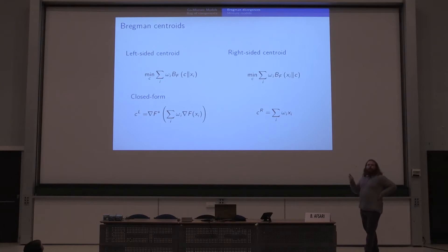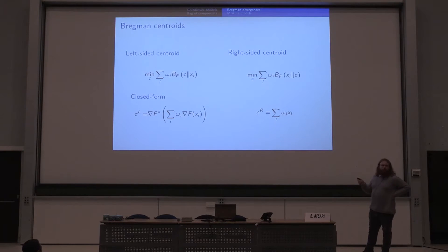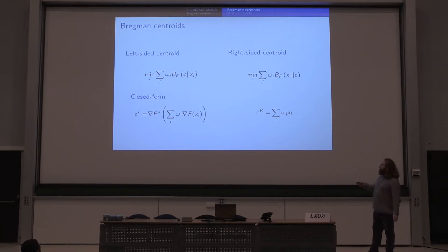Since the Bregman divergence is not symmetrical, we have two different notions of centroid: a left-sided one, where the minimization problem is on the left argument of the Bregman divergence, and a right-sided centroid, where the centroid is on the right side. In both cases, we have a closed-form formula to compute it efficiently.